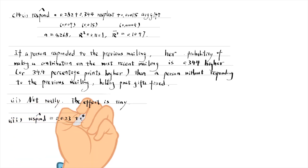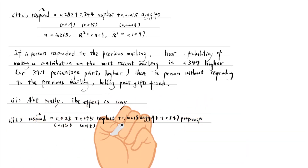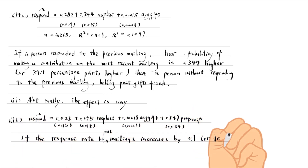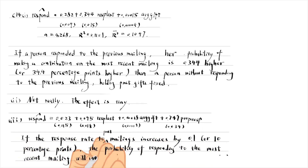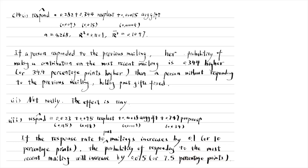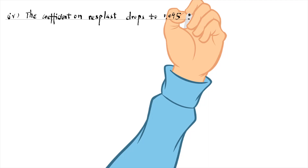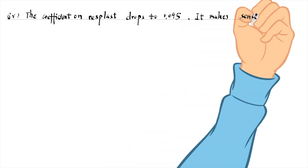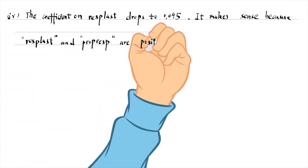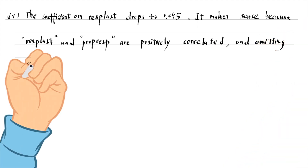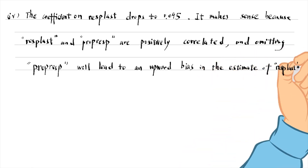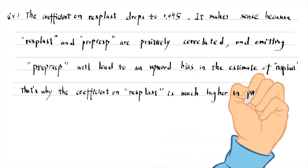In part 3, we add the response rate to the model. Its coefficient estimate is 0.749. It implies that if the response rate to past mailings increases by 0.1 or 10 percentage points, the probability of responding to the most recent mailing will increase by 0.075 or 7.5 percentage points, holding the other two variables in the model fixed. When the response rate to past mailings is added to the model, the coefficient on the dummy variable response to the last mailing drops to 0.095. It makes sense because these two variables are positively correlated, and omitting the response rate will lead to an upward bias in the estimate of the response dummy. That is why the coefficient on response to the previous mailings is much higher in part 1.